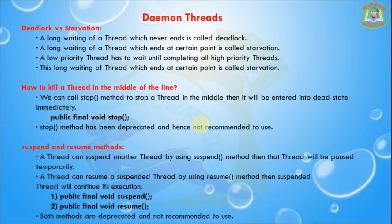Next, I will discuss suspend() and resume() methods. A thread can suspend another thread using the suspend() method, which pauses it temporarily. The signature is: public final void suspend(). A thread can resume a suspended thread using the resume() method, which continues its execution. The signature is: public final void resume(). Both methods are deprecated and not recommended for use.